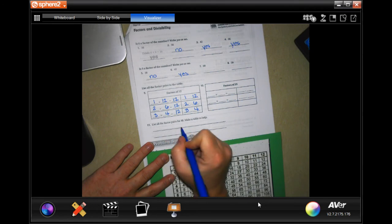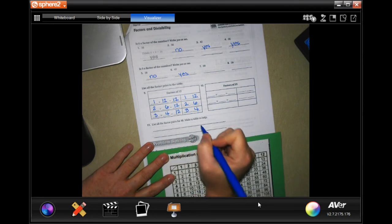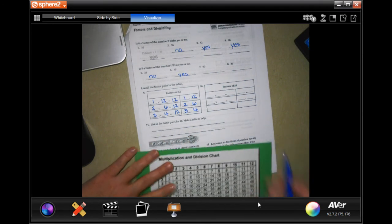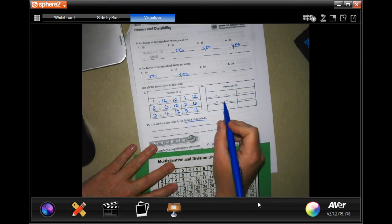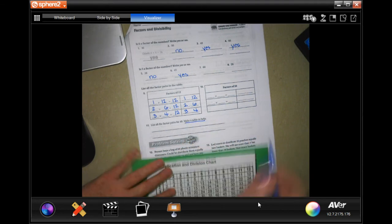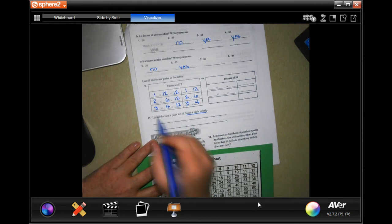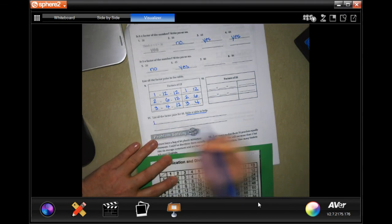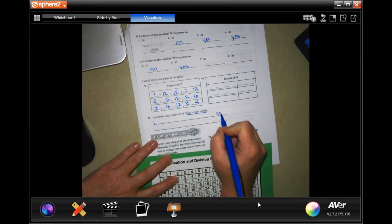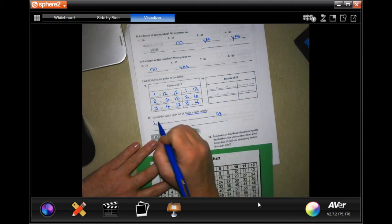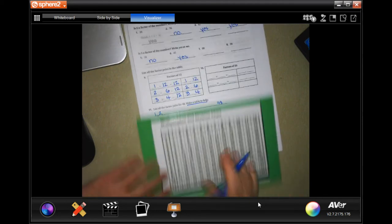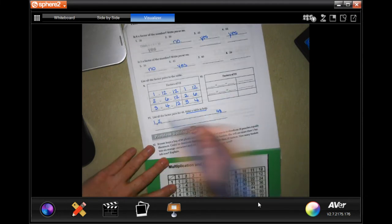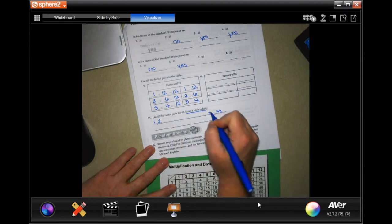We're going to list all the factors for the pairs that make up 48. You can make a table like this. I'm not going to take the time to do that. So, the factors of 48. Obviously, we have one and 48. It's an even number, so we're going to have two go down. Well, this one's not going to show us, but 24 times.